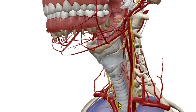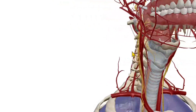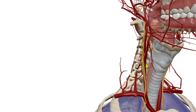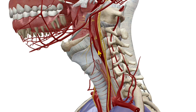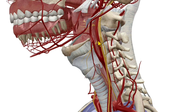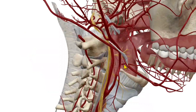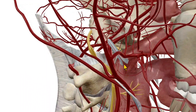Today we learn about the internal carotid artery and its branches. In the figure, here is the left common carotid artery that divides into the external carotid artery and internal carotid artery, and also here is the right common carotid artery. The external carotid artery supplies the face and neck, whereas the internal carotid artery supplies the brain.